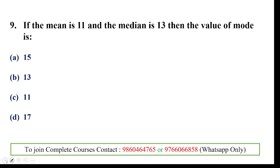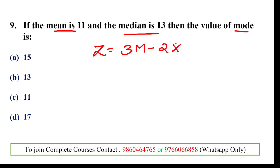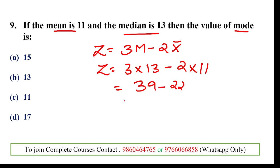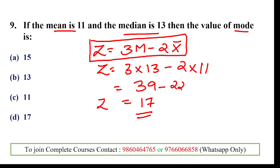Next: if mean = 11 and median = 13, then mode = ? Using the empirical relationship: Mode = 3×Median − 2×Mean. So mode = 3×13 − 2×11 = 39 − 22 = 17. This equation is very important.